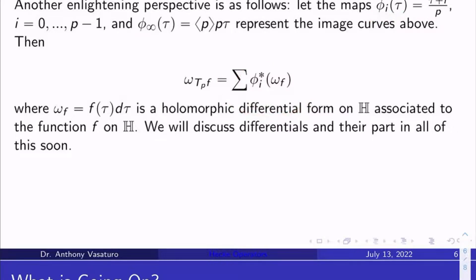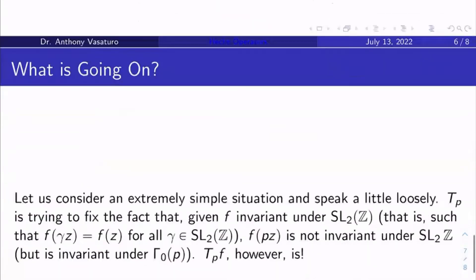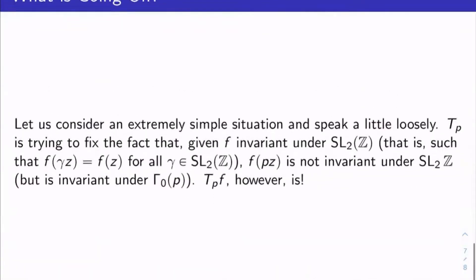And I can sum those all up over all my various maps. And it turns out that when you do that, you get nothing but the holomorphic differential associated to T_p of f, which is awesome. So this is a great, clean, succinct interpretation of the Hecke operators, provided you don't want to deal directly with the Hecke operator, and you'd rather deal with its differential. I mean, you kind of sacrifice directness for cleanliness here.